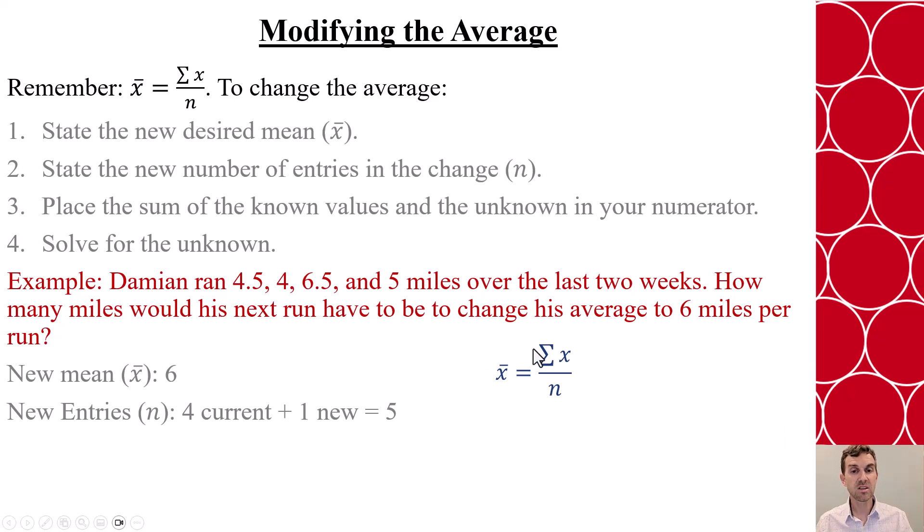So let's plug in the pieces to this equation. Our new average is 6, our new entries is 5, and now we can add up the known plus the one unknown. We don't know how many will be that fifth run, so we're going to put m for miles.